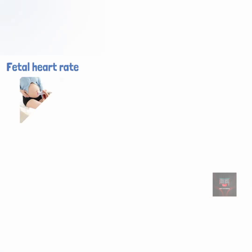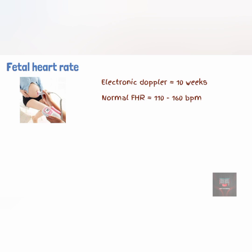Hearing the fetal heartbeat confirms the presence of a viable pregnancy. Electronic Doppler devices can detect fetal heart tones as early as 10 weeks gestation. Normal fetal heart rate ranges from 110 to 160 beats per minute. If fetal heart tones are not auscultated by 12 weeks gestational age with a Doppler device, an ultrasound evaluation should be performed to document a viable intrauterine pregnancy.